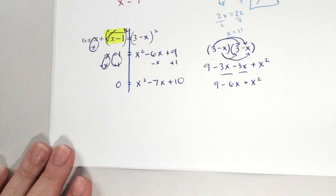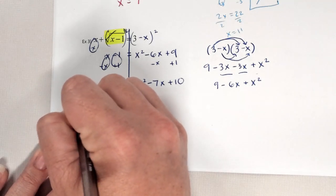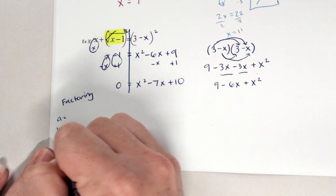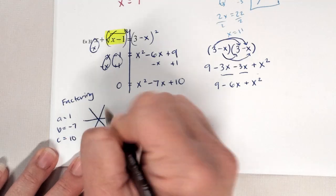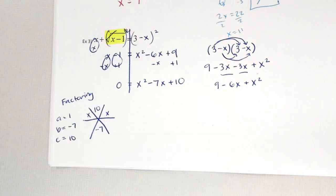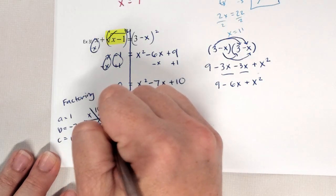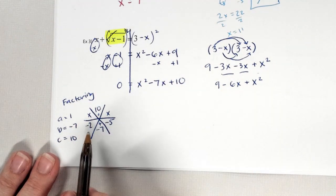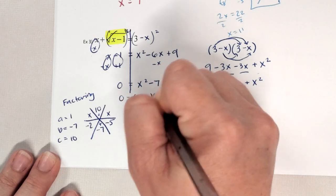Now I can solve my quadratic. I'm going to show you both methods. First, factoring. I need to find my A, B, and C. A is 1, B is negative 7, C is 10. A times C is 10, B is negative 7. What multiplies to give you 10 and adds to give you negative 7? Negative 2 and negative 5 — two negatives multiply to give you positive, and they add to give you negative 7. So this gives me 0 equals x minus 2 times x minus 5.